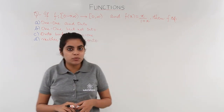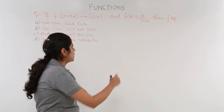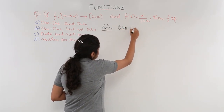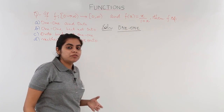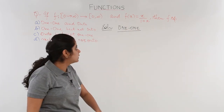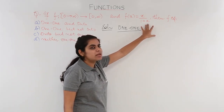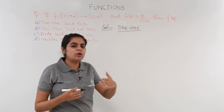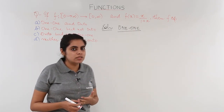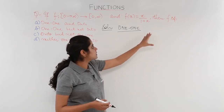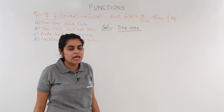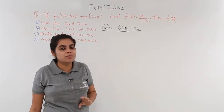First we have to check whether the function is one-one. To check whether a function is one-one we have three ways. The graph method is not easy here, so let's skip that. Next is using calculus — we have something in the form of numerator upon denominator, so we can solve using calculus.